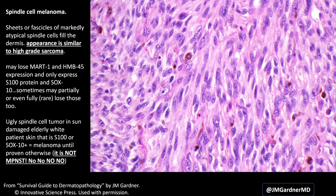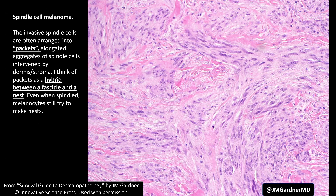For comparison, this is what spindle cell melanoma looks like - it is cellular and spindle-shaped, resembling a sarcoma, and is much more cellular than desmoplastic melanoma.